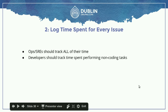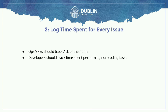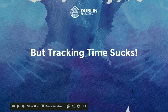The second thing is logging time. You have your ticketing system and you're tracking all of your stuff in there — great. Now you should probably track your time spent on each issue that you work on. For ops and SRE type people, it's important that they track all of their time, so you're able to see what percentage of their time is actually the toil. Developers should probably just track their time spent performing non-coding tasks, so you can figure out how many hours are spent on the stuff not coding.